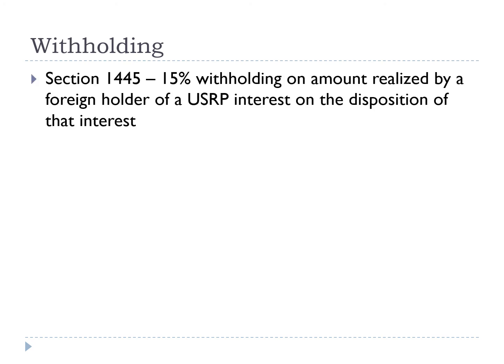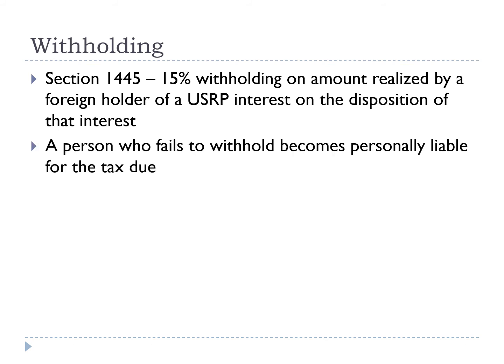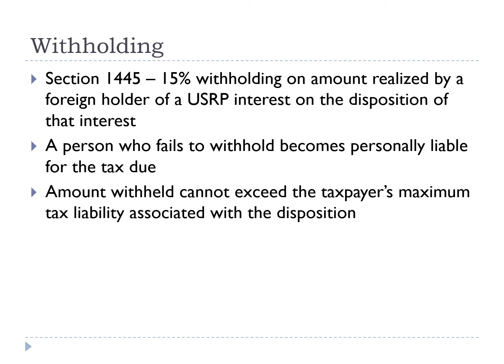Although gains and losses recognized by a foreign person on disposition of a U.S. real property interest are taxed in the same manner as those of U.S. persons, unlike U.S. persons, foreign persons are subject to withholding on those dispositions. Section 1445 requires a transferee to withhold and remit 15% of the amount realized by a foreign holder of a U.S. real property interest on the disposition of that interest. A person who fails to withhold becomes personally liable for the tax due. The amount withheld cannot exceed the taxpayer's maximum tax liability associated with the disposition. The transferor or transferee can request a determination and a certificate from the IRS of that liability. If tax is withheld at the default rate of 15%, the taxpayer can request a refund of tax withheld in excess of the taxpayer's liability.